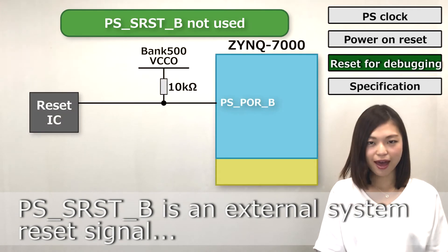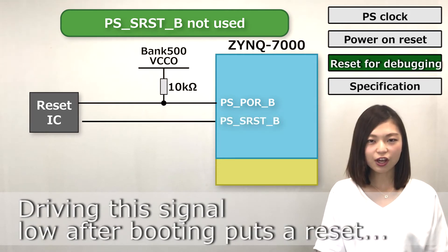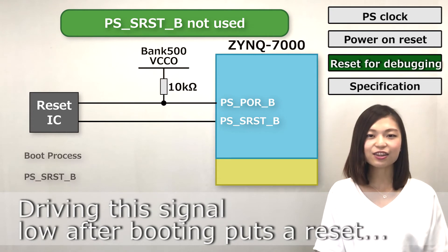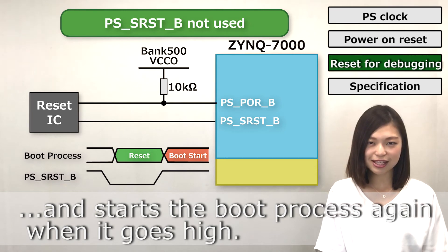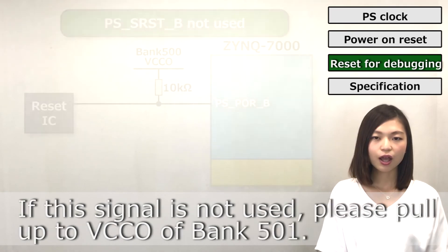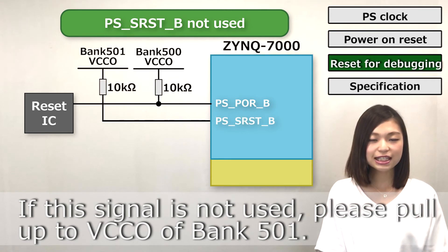PSSRST_B is an external system reset signal and is normally used for debugging. Driving this signal low after booting puts it in reset, and the boot process starts again when it goes high. If this signal is not used, please pull up to VCCO of bank 501.